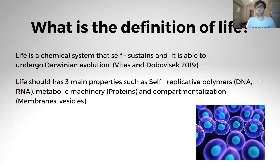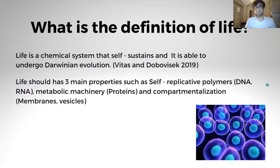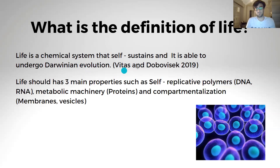So what is the definition of life? Defining life has been a major problem for many scientists because there are so many exceptions. At least we have a definition stated by NASA: life is a chemical system that self-sustains and is able to undergo Darwinian evolution. This emphasizes a self-sustained chemical system and Darwinian evolution.